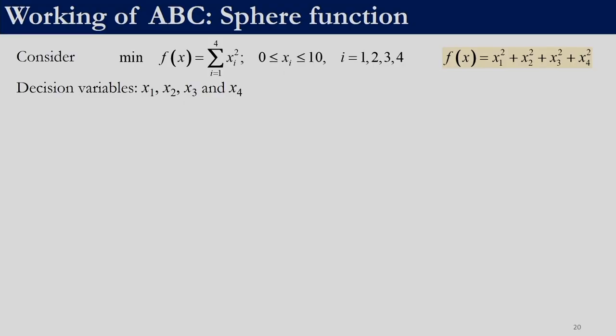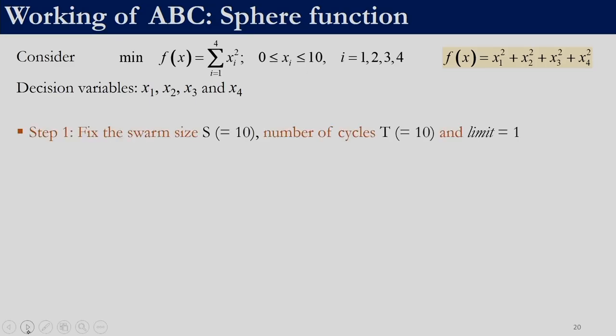Welcome to this session. We will now take the same example that we have been taking for all the other metaheuristic techniques — the sphere function. We will take the sphere function with four decision variables. The first step is to fix the swarm size, the number of cycles, and the parameter limit.